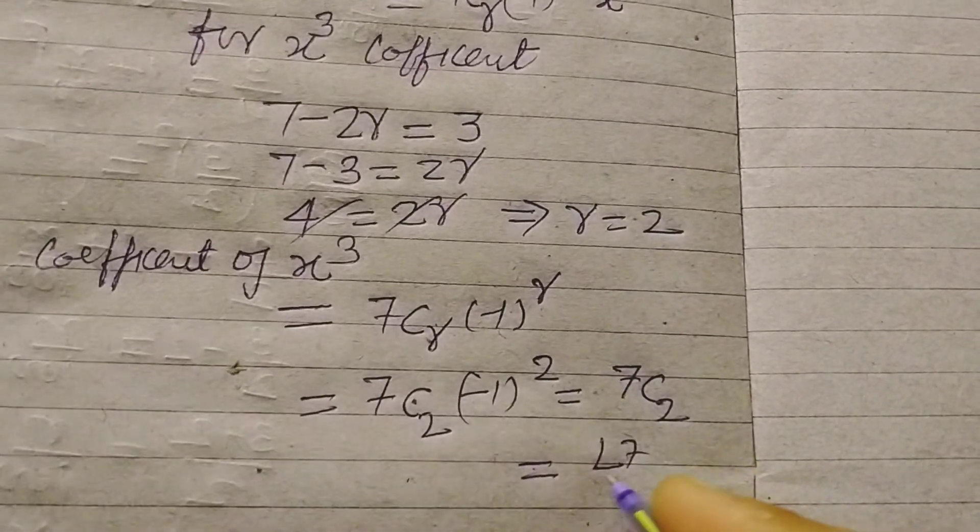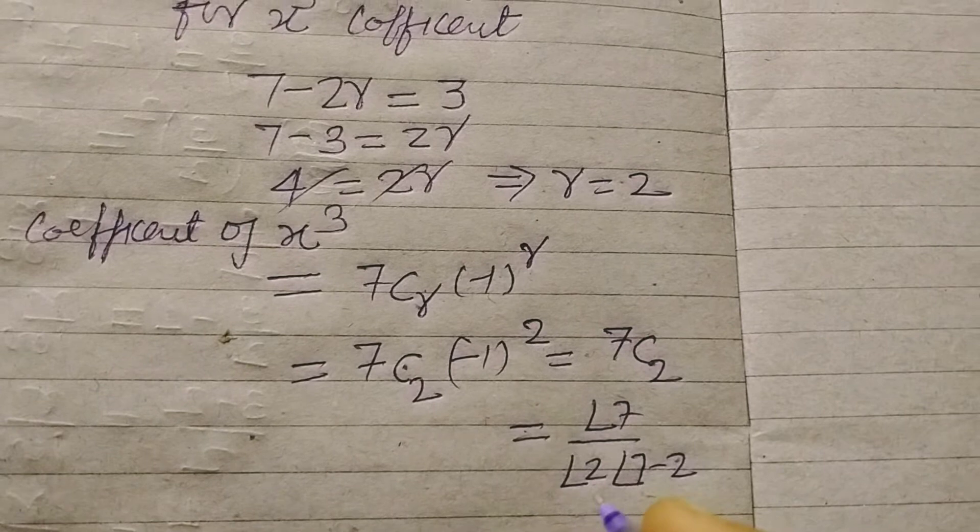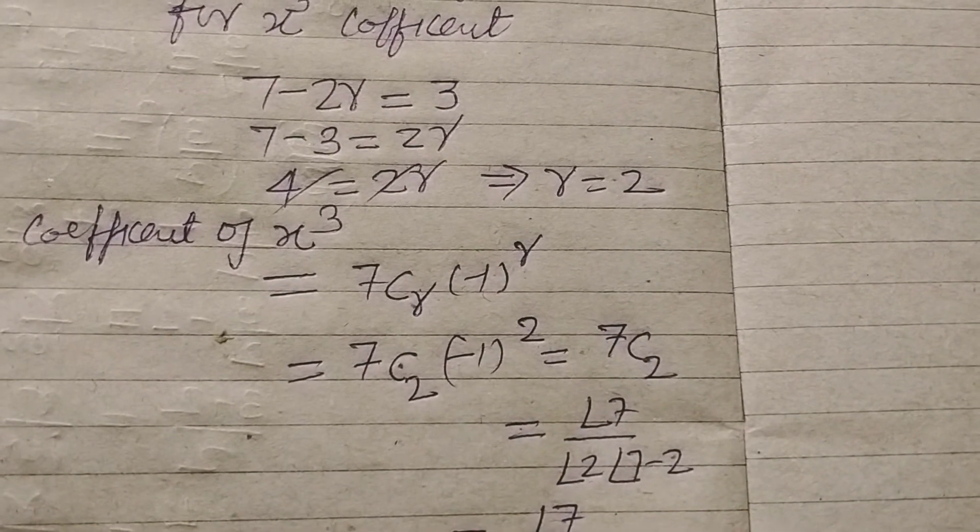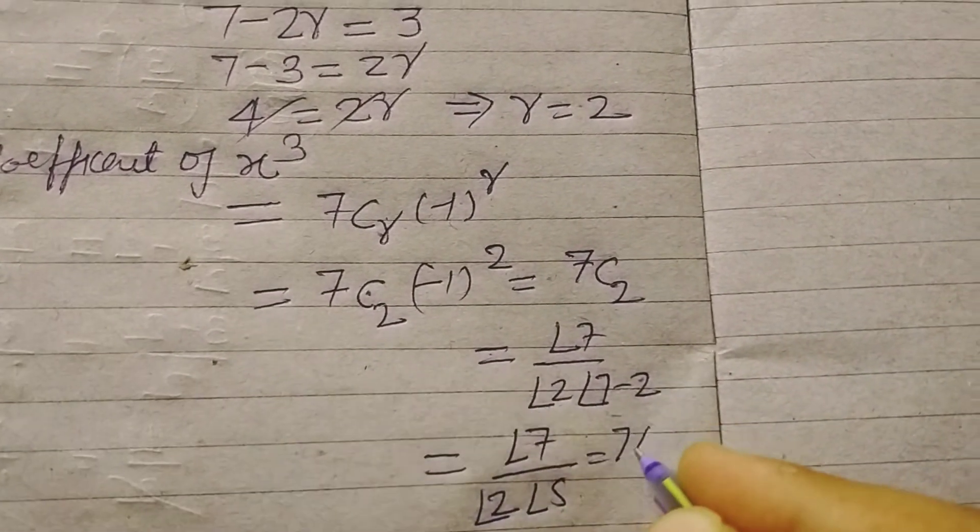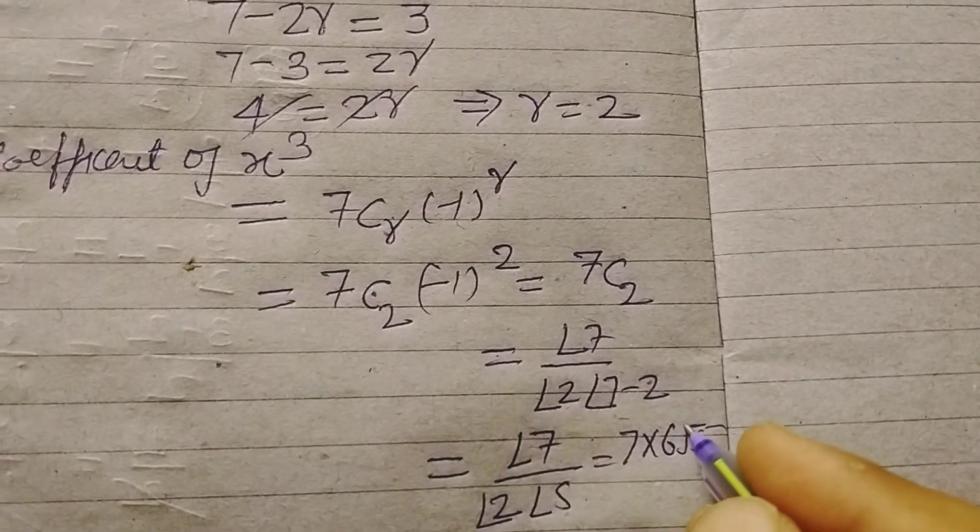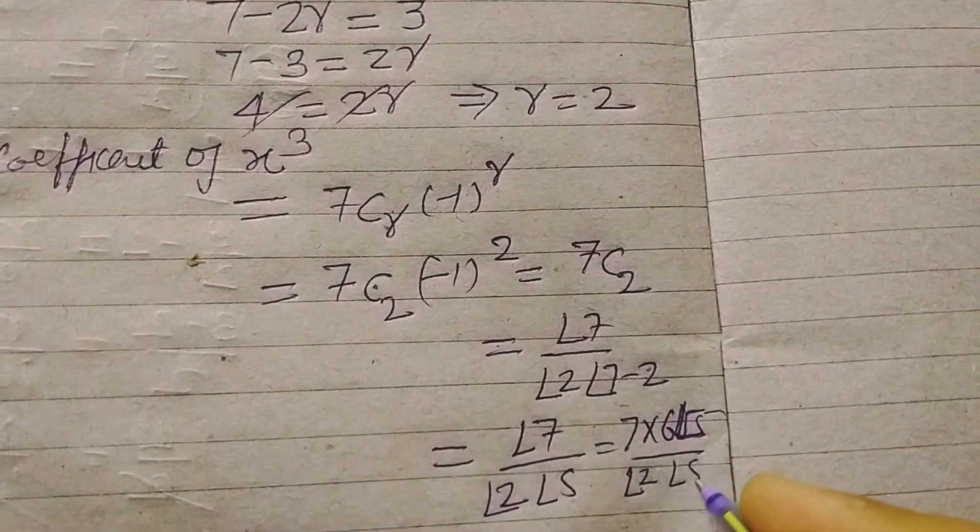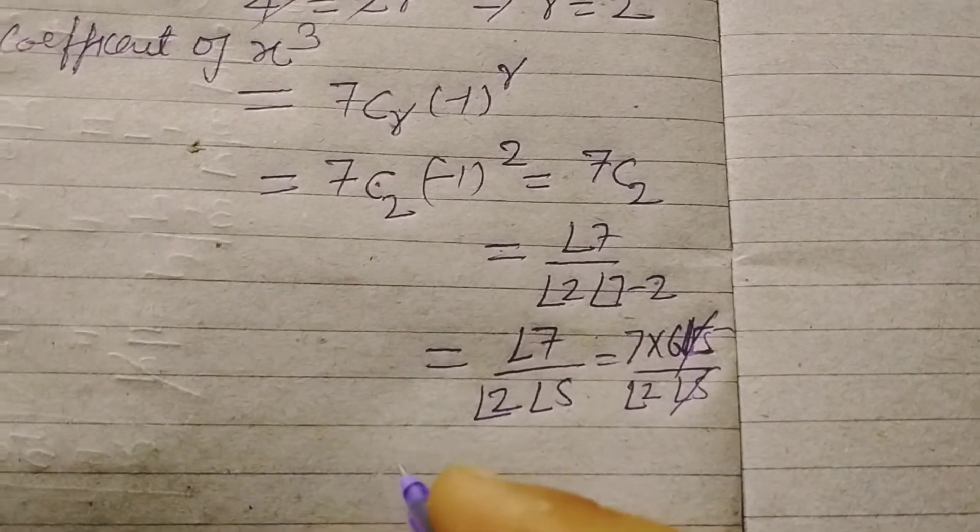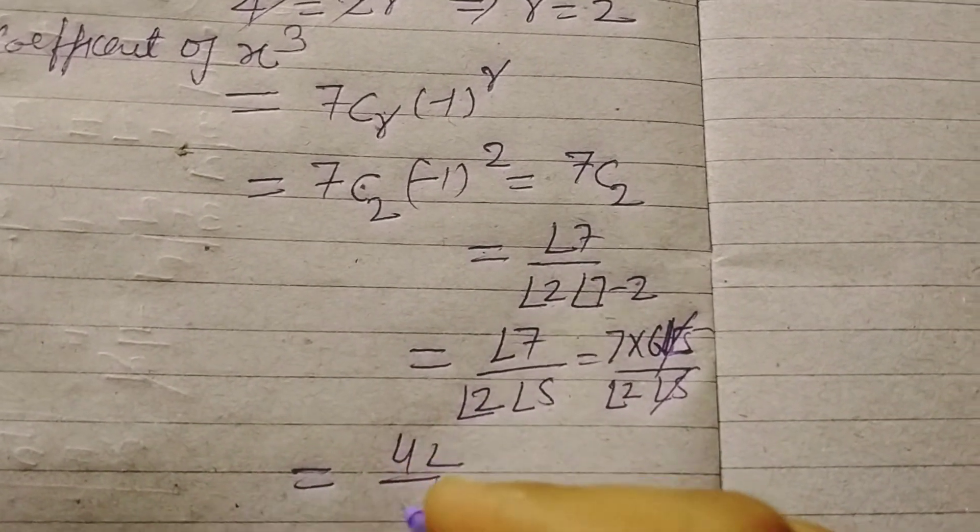Factorial 7 upon factorial 2 times factorial 7 minus 2. Therefore, factorial 7 upon factorial 2 into factorial 5. So this is 7 into 6 upon factorial 2. Factorial 5 cancels and we get 42 over 2, which is 21.